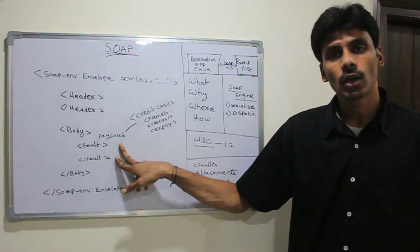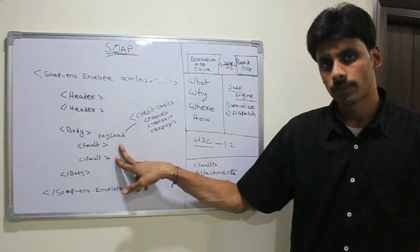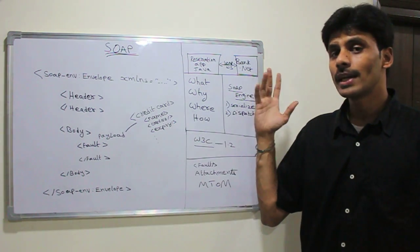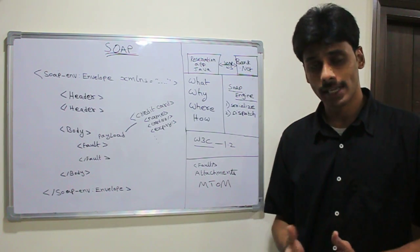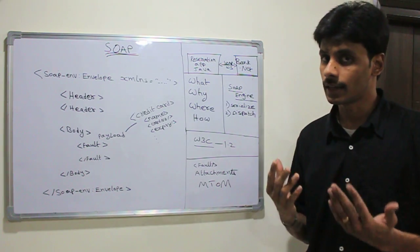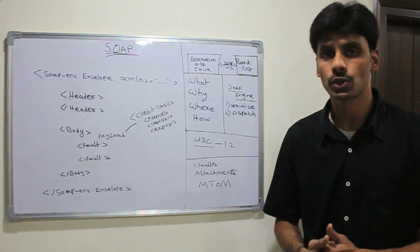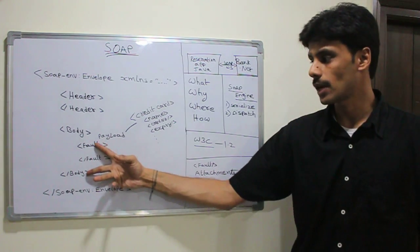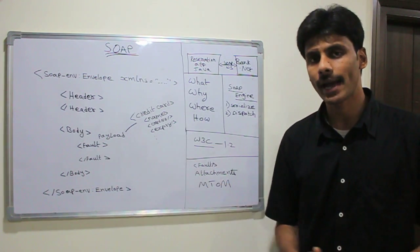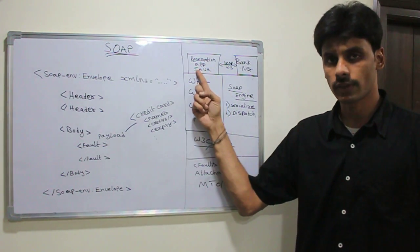And the body also has a special element called fault, SOAP-fault. The fault element is when something goes wrong on the bank or the payment gateway side. Let's say the credit card has expired or the address information is wrong or something is wrong with the credit card. Then we get a SOAP-fault back. All the exception information is wrapped inside the fault and it is sent back to the calling application, which is the reservation application.